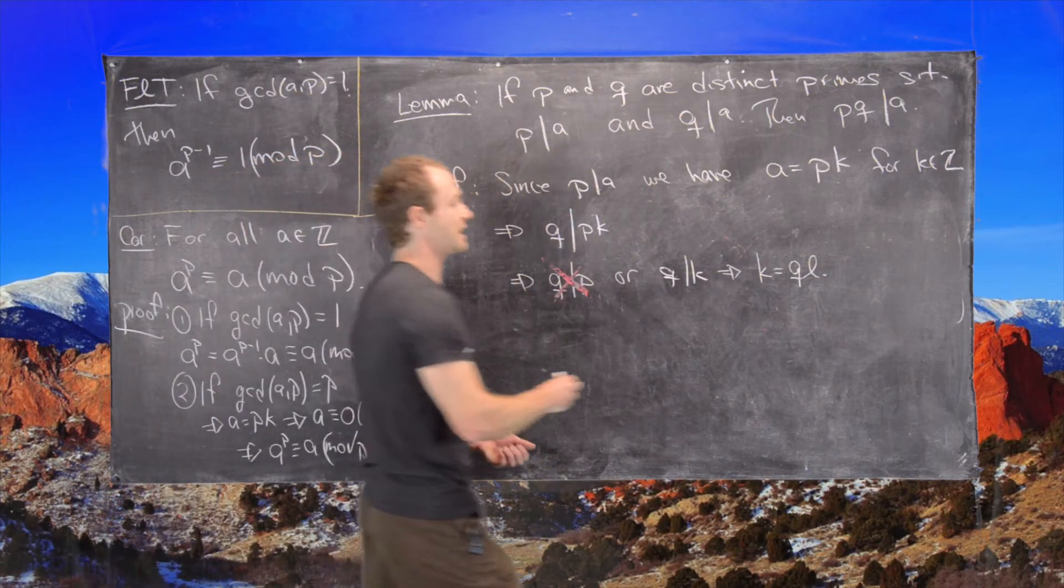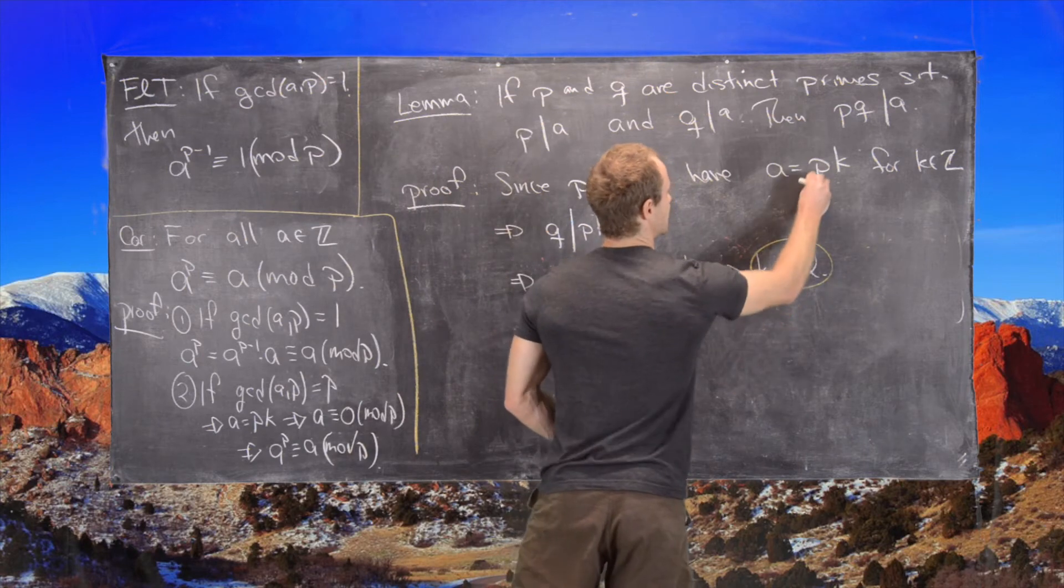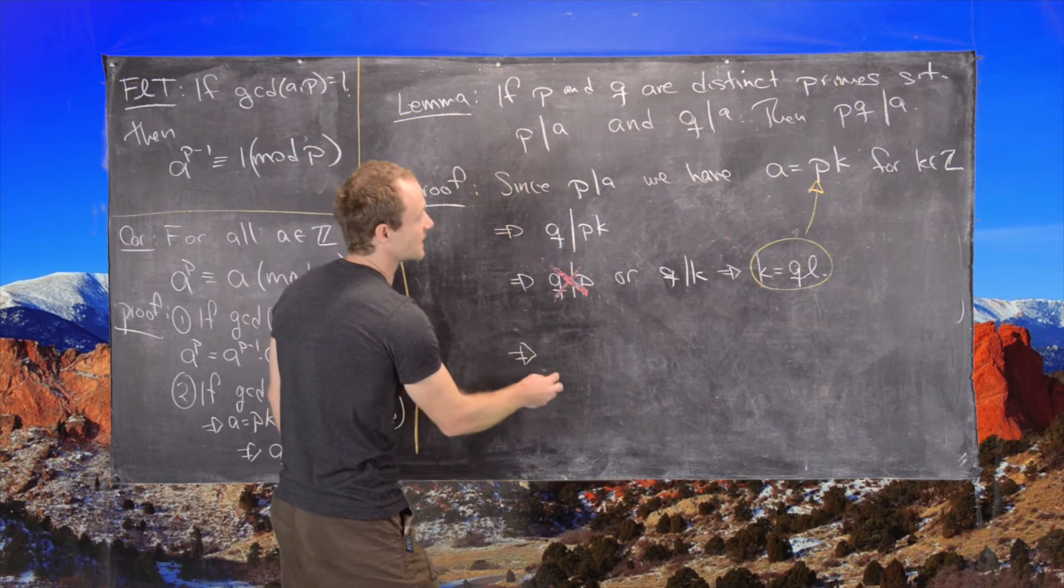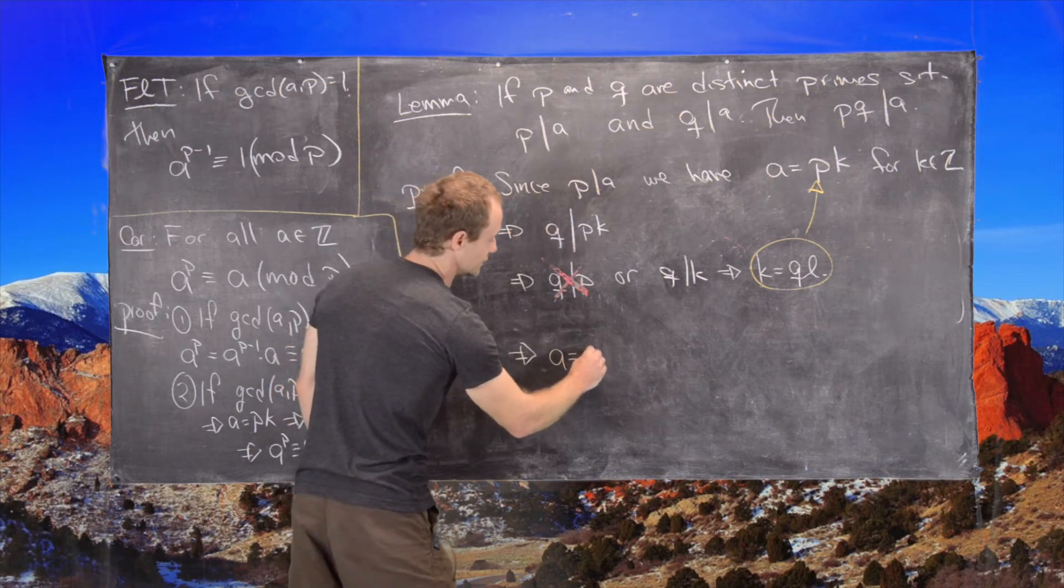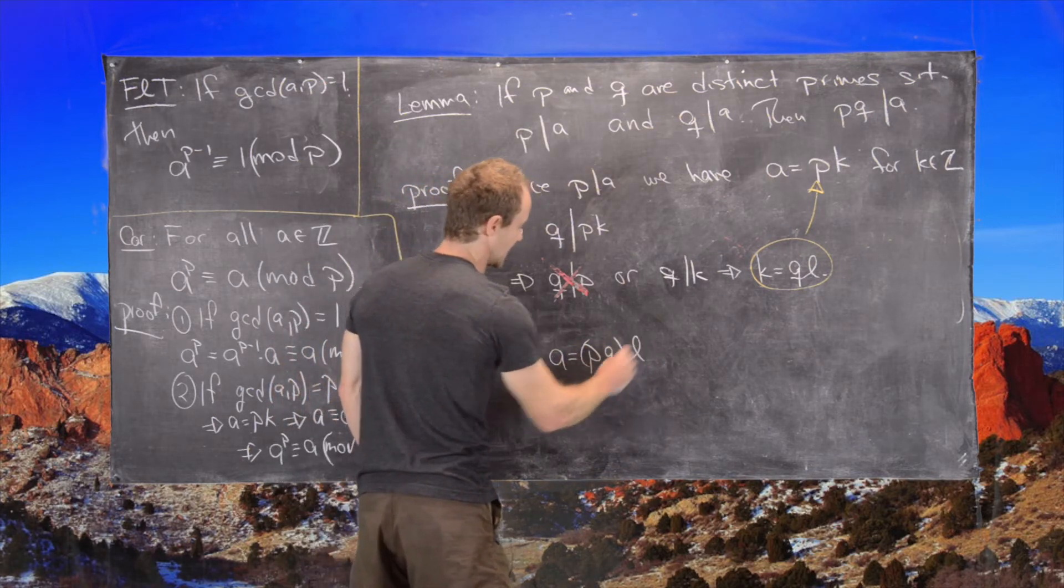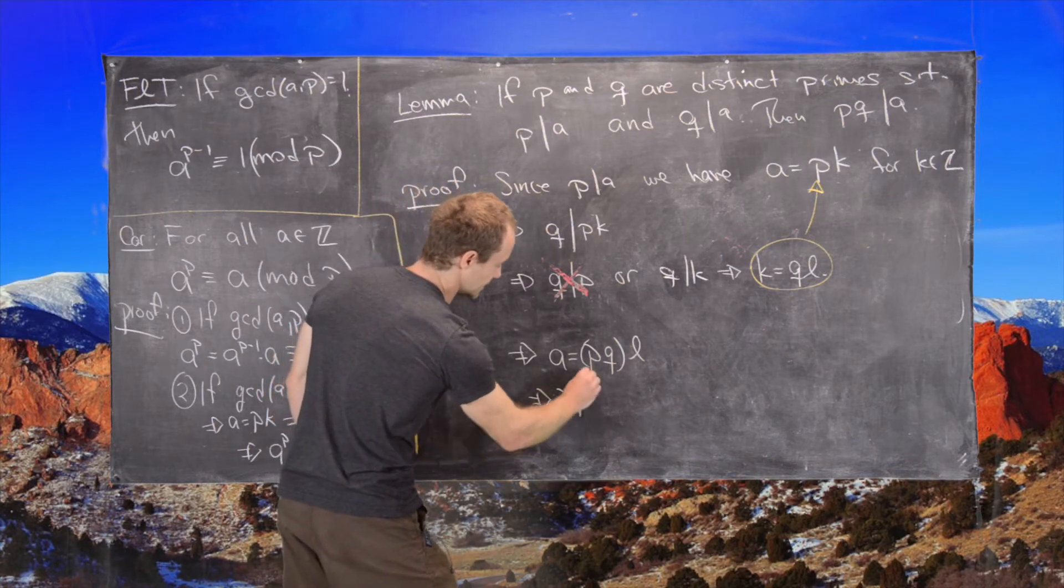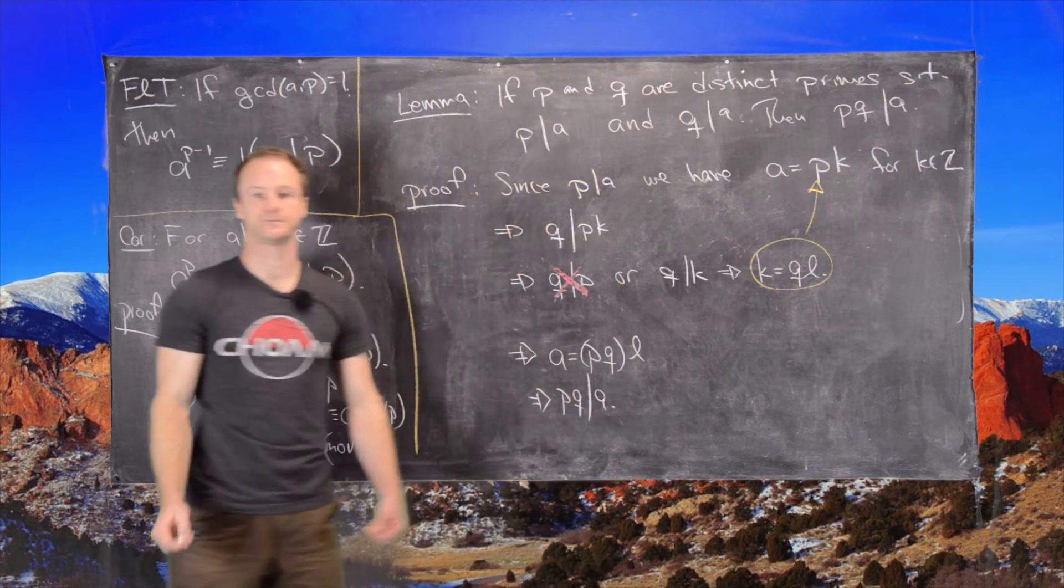Now inserting this into this expression for A, we have A is equal to P times Q times L, which is exactly equal to P times Q divides A.